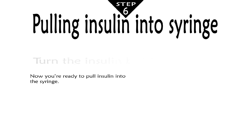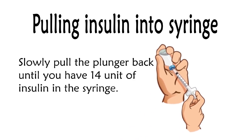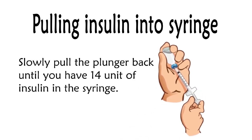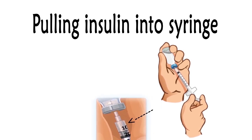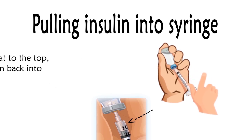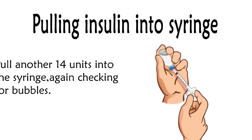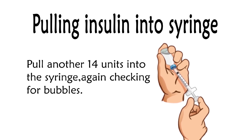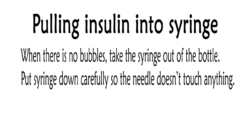Now you are ready to pull insulin into the syringe. Turn the insulin bottle and syringe upside down. Slowly pull the plunger back until you have 14 units of insulin in the syringe. Check the syringe for air bubbles. If you see any, hold both the bottle and syringe in one hand and tap the syringe with the other hand. The bubbles will flow to the top. Then push the insulin back into the bottle and again pull another 14 units into the syringe. Check again for bubbles. When there are no bubbles, take the syringe out of the bottle. Put the syringe down carefully so the needle does not touch anything.